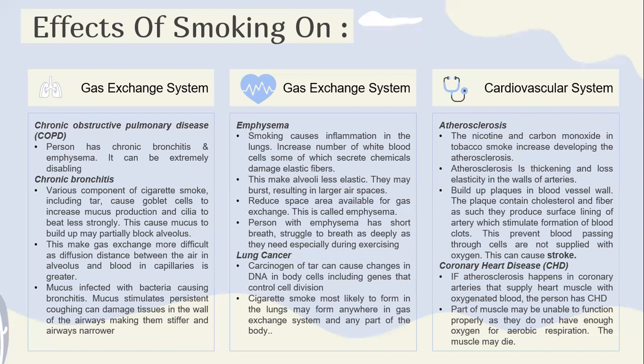The effect of smoking on the cardiovascular system. First, there is atherosclerosis. Nicotine and carbon monoxide in tobacco smoke can increase the development of atherosclerosis. Atherosclerosis is the thickening and loss of elasticity in the wall of arteries. Plaques build up in the blood vessel wall and can contain cholesterol and fibrous material. These damage the surface lining of the artery, which stimulates the formation of blood clots. This can cause a stroke.